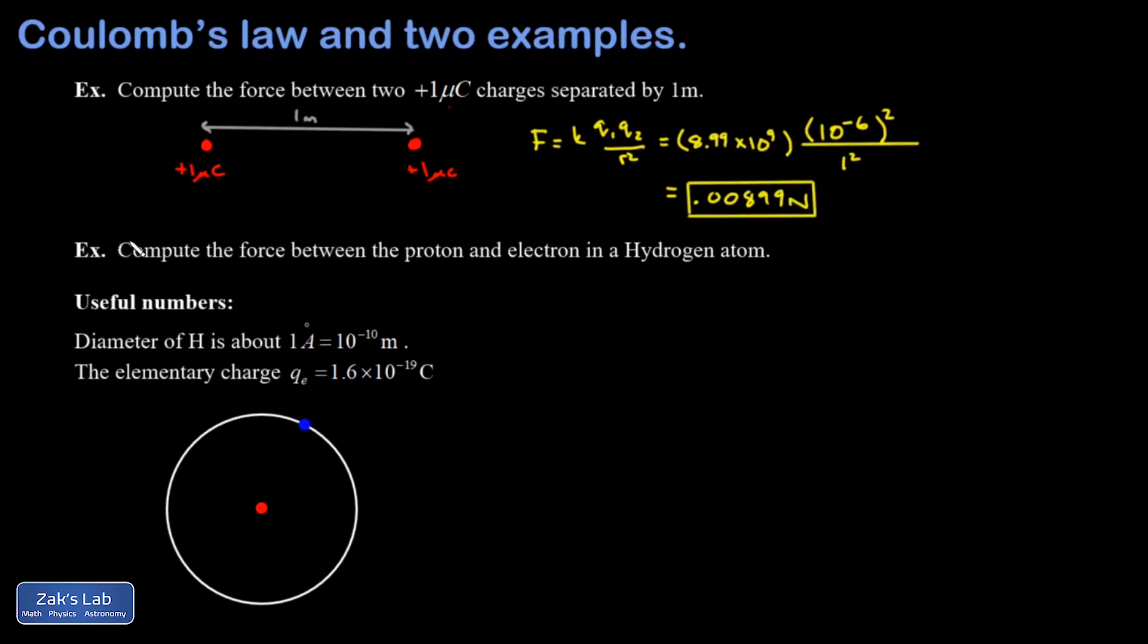In my second example, I want to find the force of attraction between the proton and the electron in a hydrogen atom. And I'm given some useful numbers here. The diameter of hydrogen is about one angstrom. That's the A with the little circle over it. And that's ten to the negative tenth meters. And that means the radius, which is really what I'm interested in because that's the separation distance. The radius is going to be half the diameter or 0.5 times ten to the negative ten meters. I'm also told the elementary charge is 1.6 times ten to the negative 19th coulombs.